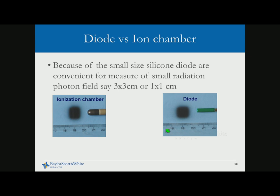When using output measurements, be careful with small field output. For field sizes of 3×3 or 1×1 cm, a silicon diode is much better compared to an ion chamber due to volume averaging effects. Because of its small size, the diode is better suited for small fields. However, you must be aware of diode over-response to low energy photons due to the predominant photoelectric effect — choose the right tools for your measurements.